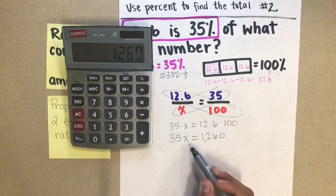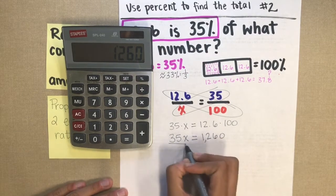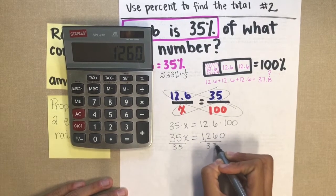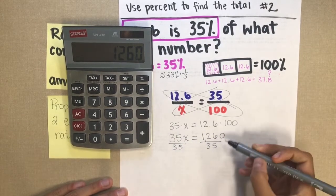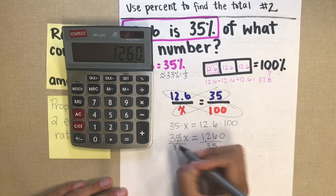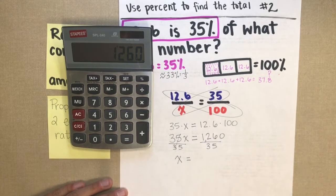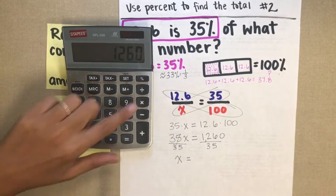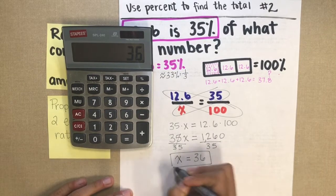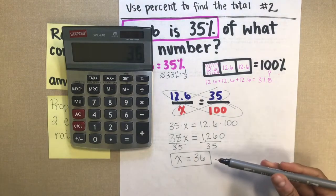All I need to do to solve for x now is divide by the coefficient, 35. Whatever I do to one side, I do to the other side. Because this is an equation, they're equal. 35 divided by 35 just gives me 1x.